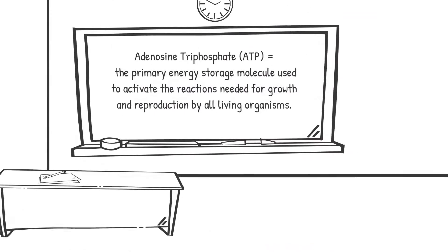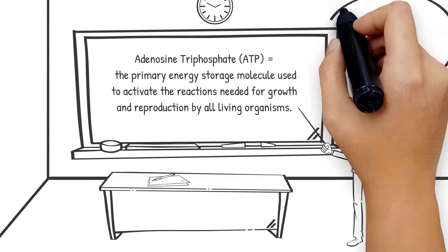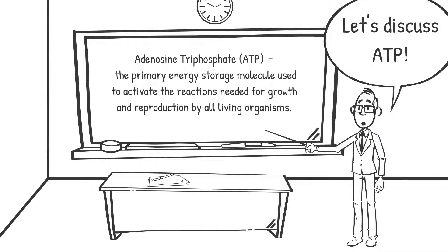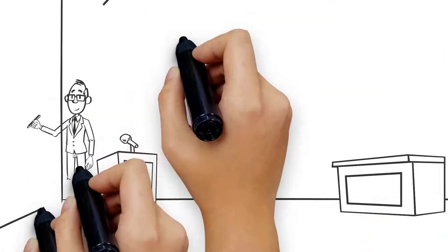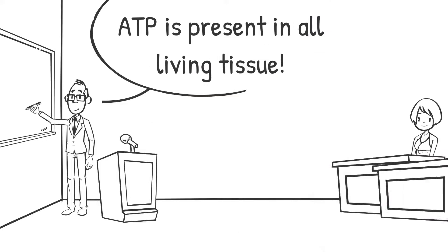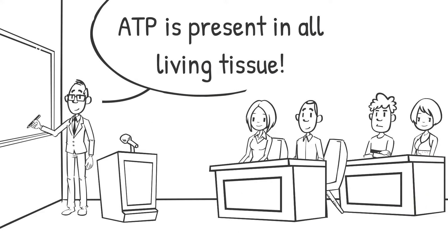Adenosine triphosphate, or ATP, is the primary energy storage molecule used to activate the reactions needed for growth and reproduction by all living organisms. It is an organic compound consisting of an adenosine molecule bonded to three phosphate groups, and it is present in all living tissue.